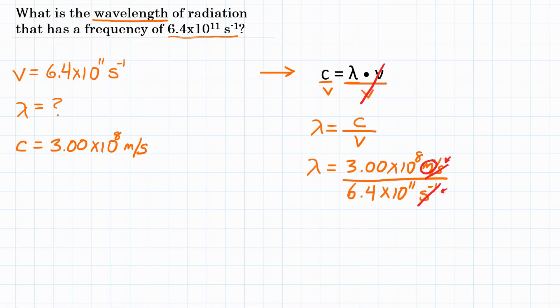So now we can do the math in your calculator. You are going to enter 3.00 times 10 to the 8th. And we are going to divide by everything in the denominator. Since it is in scientific notation, we need to make sure that it stays all together. So one way to do that is to open parenthesis and then put 6.4 times 10 to the 11th, close parenthesis. Again, so that 6.4 times 10 to the 11th all stays together.